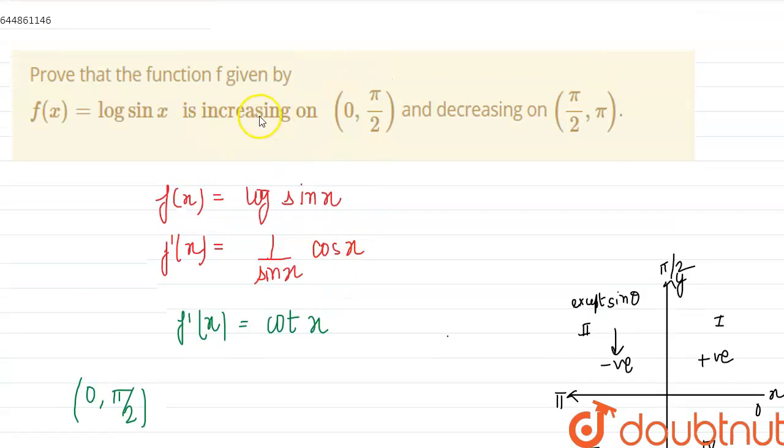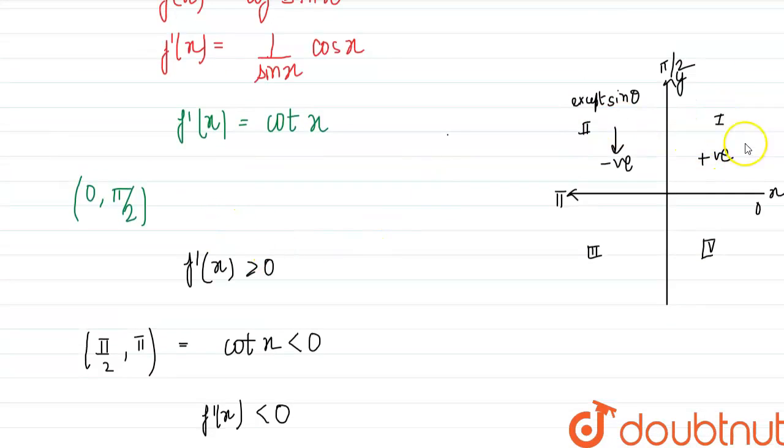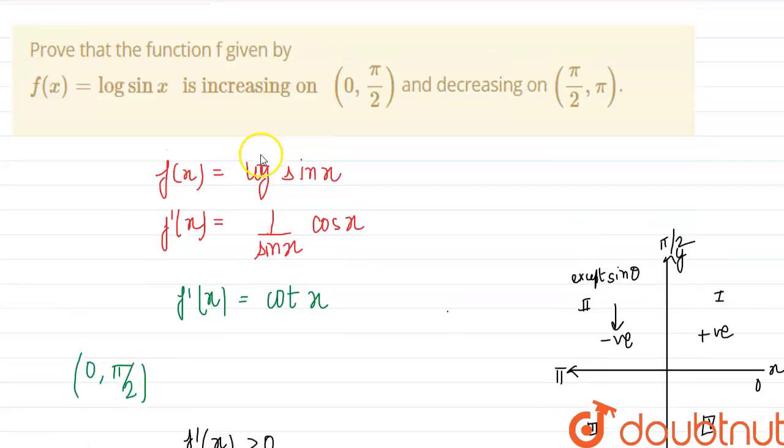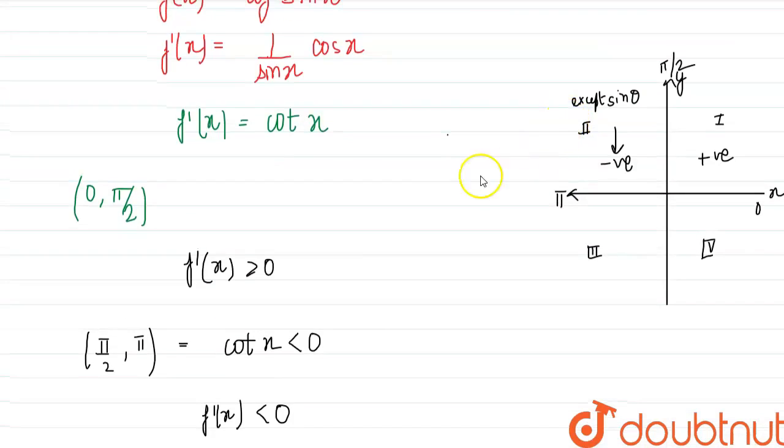So our given function is increasing in (0, π/2). As we can see this is positive so this is increasing, and in (π/2, π) this is negative. So f'(x) < 0, so this is decreasing in (π/2, π).